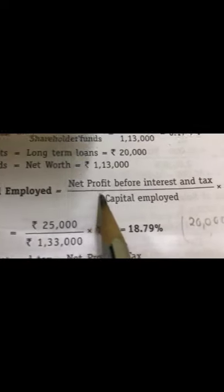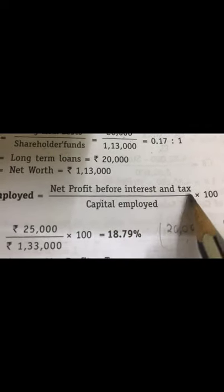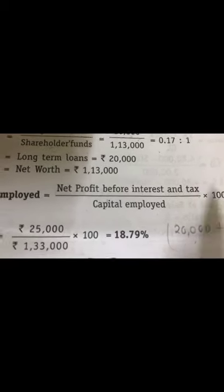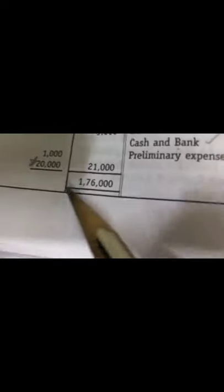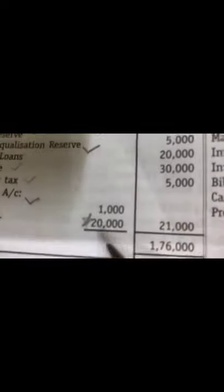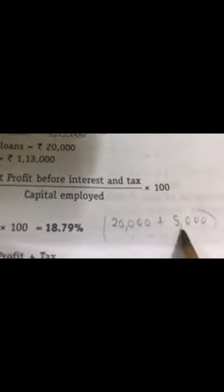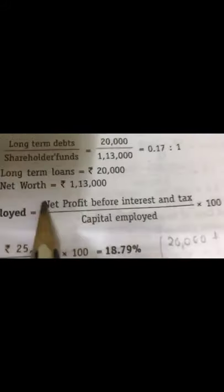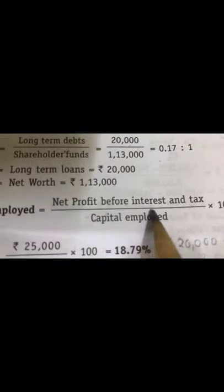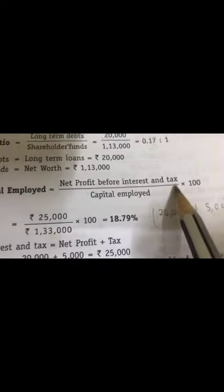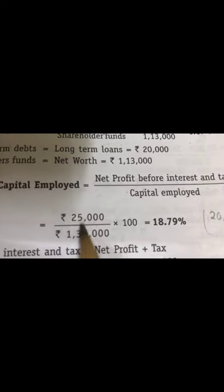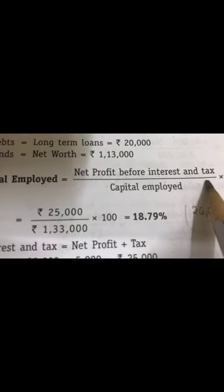Now we move on to return on capital employed. The formula is net profit before interest and tax divided by capital employed, multiplied by 100. Net profit for the current year is Rs. 20,000. To this, add back the tax amount of Rs. 5,000, which is given on the liability side of the balance sheet. This gives net profit before interest and tax of Rs. 25,000.